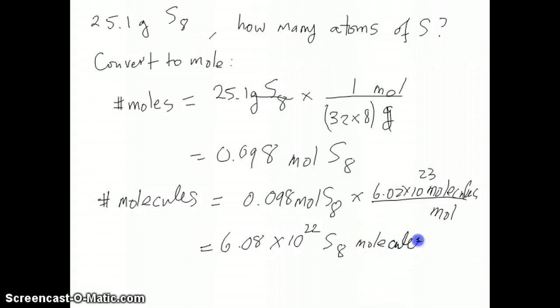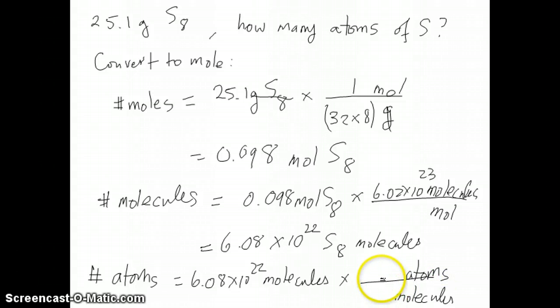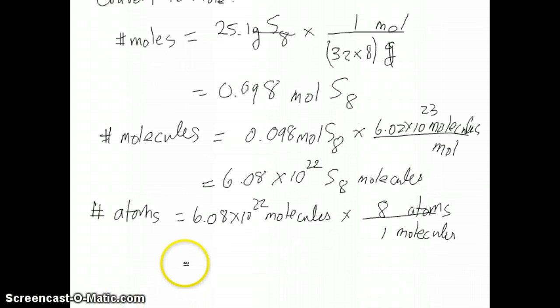Now, remember that in the question itself, we're not being asked molecules, but we're being asked atoms of S. The number of atoms then is the number that we just got there, which is the molecules, and then we have to do a dimensional analysis again where we cancel out our molecule and convert it to atoms. The question is, how many atoms of S do you have in one molecule of S8? Well, there's eight. If you do this calculation, the answer that you'll get should be 4.86 times 10 to the 23rd atoms of S.